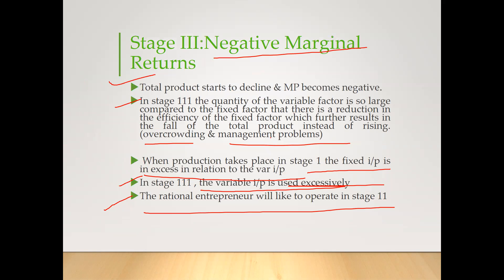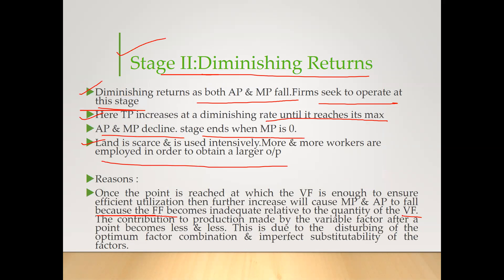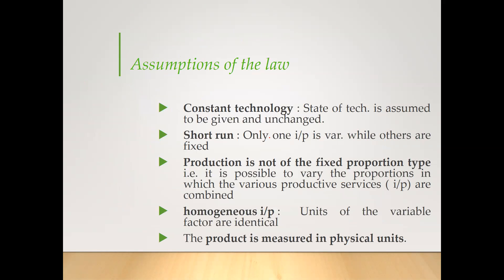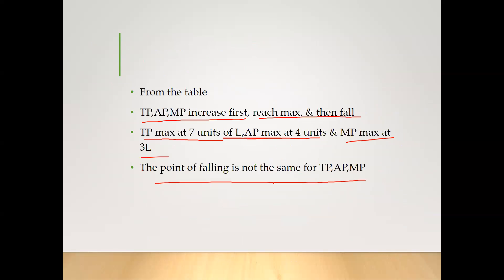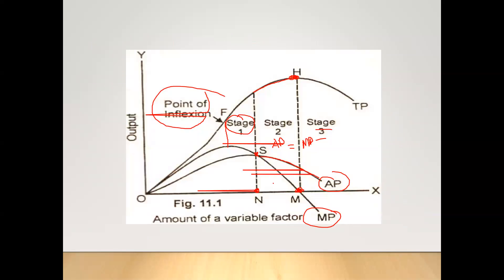This is all about the law of variable proportion — also called the law of diminishing marginal returns or the law of diminishing marginal productivity. This is the short-run production function with only one variable input. In the next video, we will discuss the production function with two variables — the isoquant. I hope this video was helpful. Thank you and keep watching.